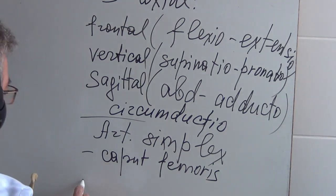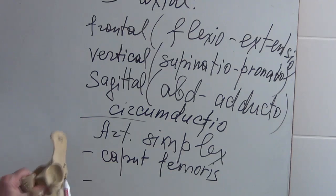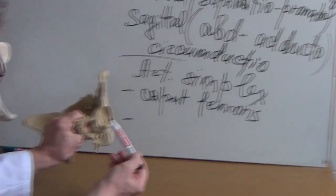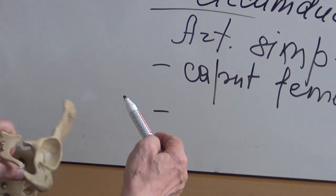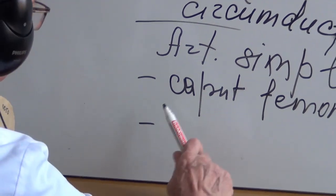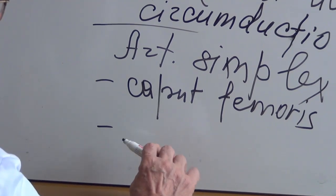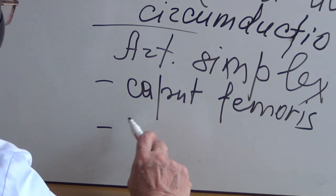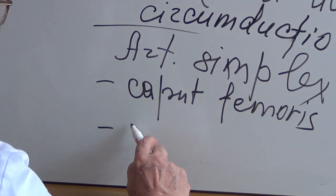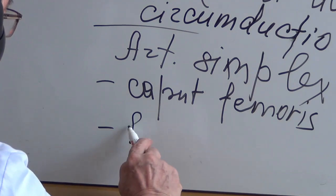And second is fossa acetabuli. Here it is. It is the cavity of the joint, fossa acetabuli.